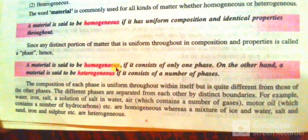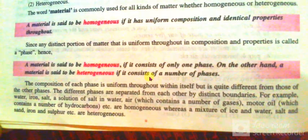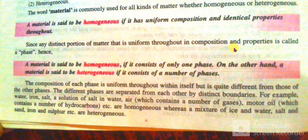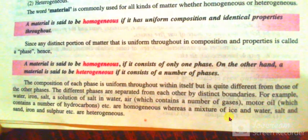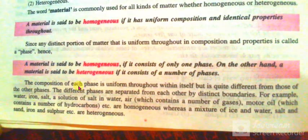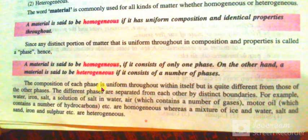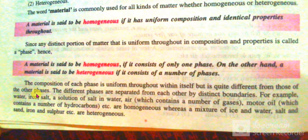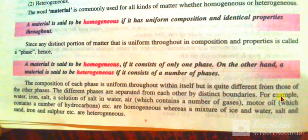On the other hand, a material is said to be heterogeneous if it consists of a number of phases. It has different composition and different properties throughout. The composition of each phase is uniform throughout within itself but is quite different from those of the other phases. The different phases are separated from each other by distinct boundaries.